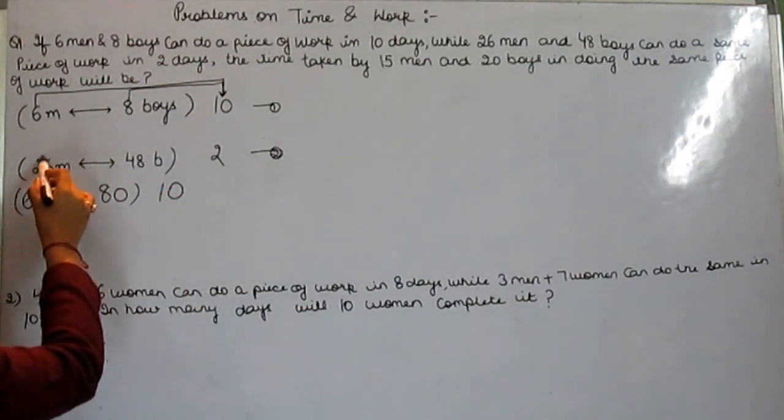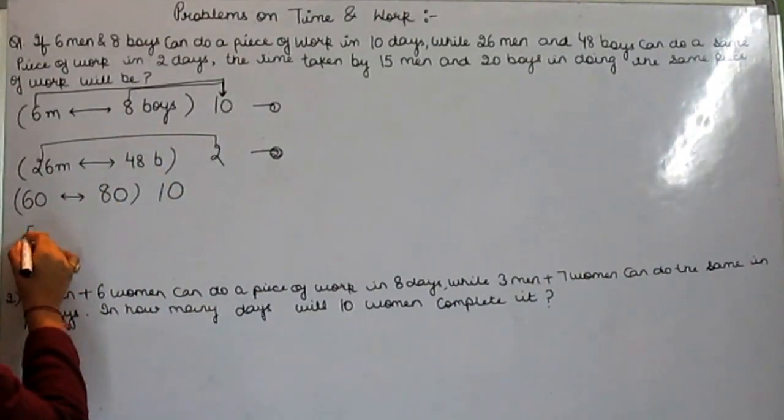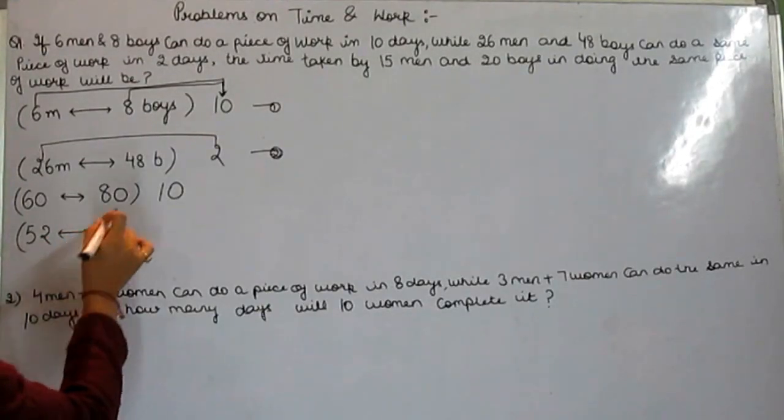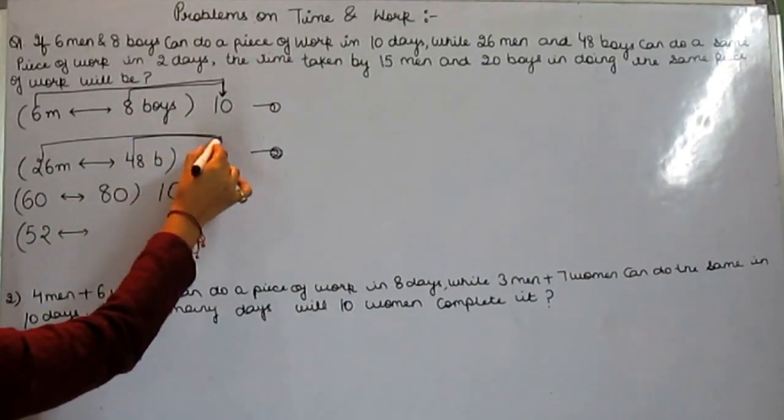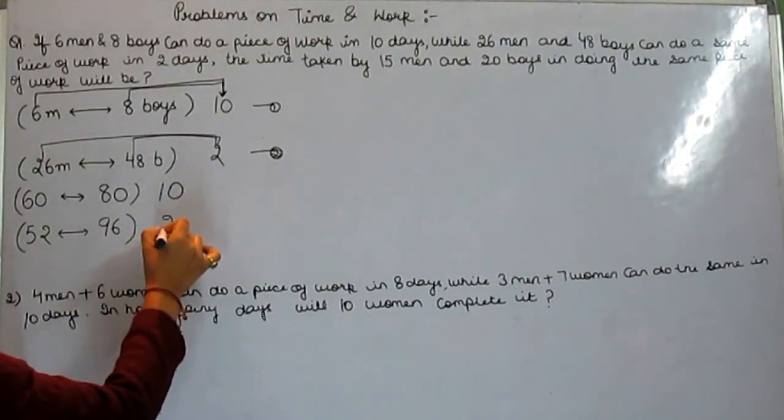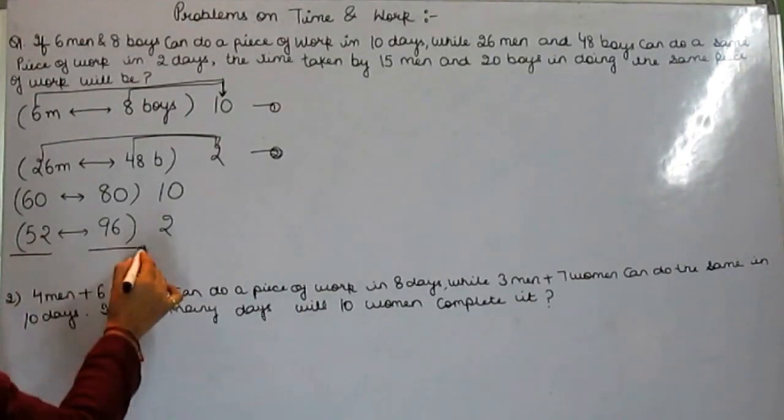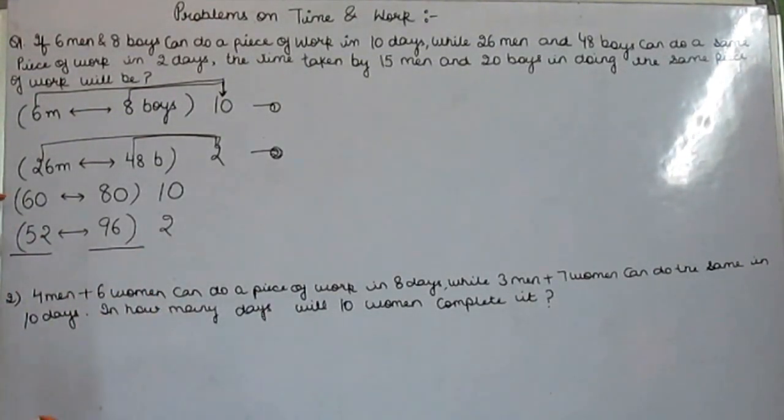Again same procedure: 26 times 2 is 52, 48 times 2 is 96, and put this 2 as it is.